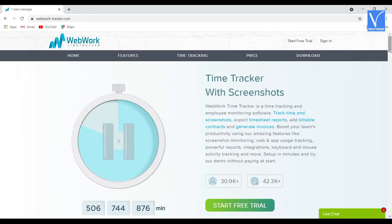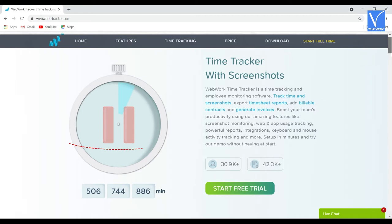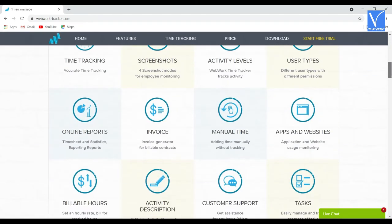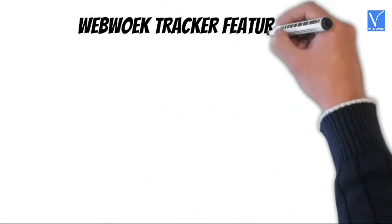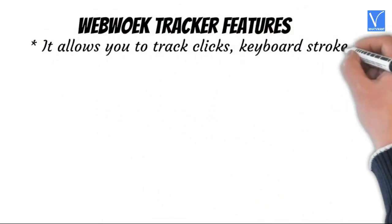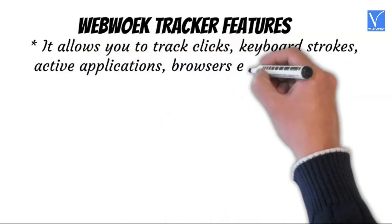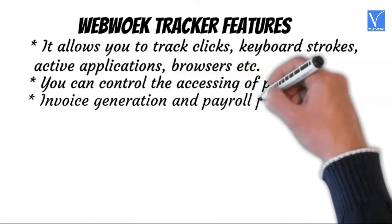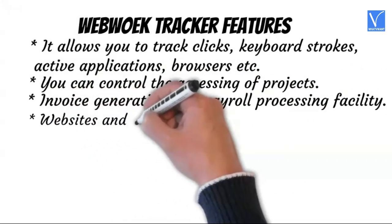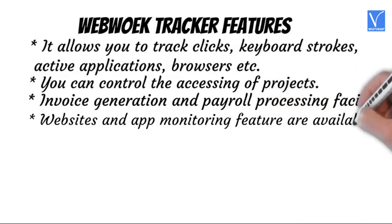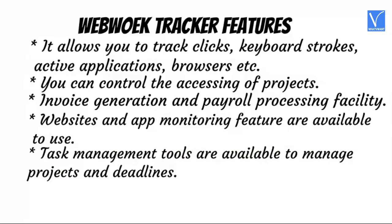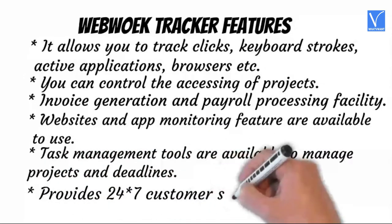Number six: WebWork Time Tracker. WebWork Time Tracker is the cheap and best employee time tracking software, with almost every function required for your employees and organization. WebWork Tracker features: it allows you to track clicks, keyboard strokes, active applications, browsers, etc. You can control access to projects. Invoice generation and payroll processing facility are available. Website and app monitoring features are available. Task management tools are available to manage projects and deadlines. It provides 24/7 customer support.